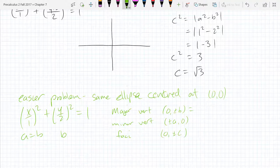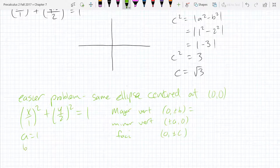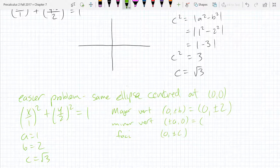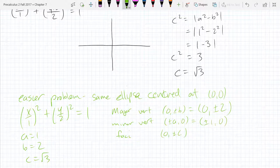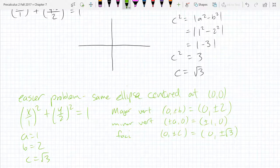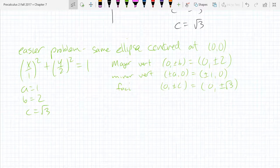a is 1, b is, oh, a is 1, b is 2, c is square root 3. So major vertices, 0 plus minus 2. Minor is going to be plus minus 1, 0. And then foci is 0 plus minus square root 3. So square root 3, not a very nice number, but it's a little smaller than square root 4. So it's a little bit smaller than 2. So this ellipse is going to be kind of small. So I'm going to use a larger scale when I graph it out.